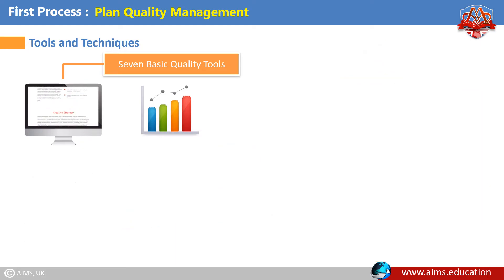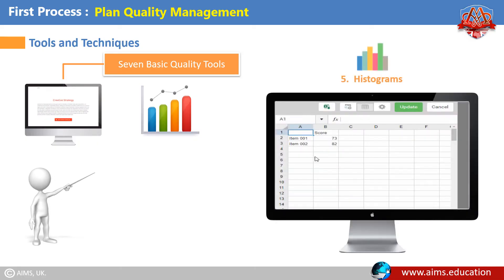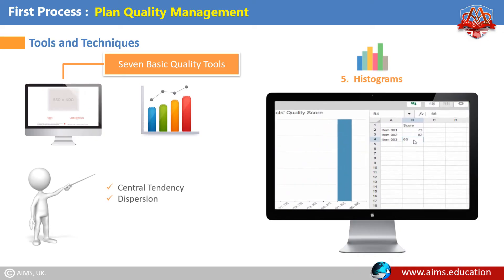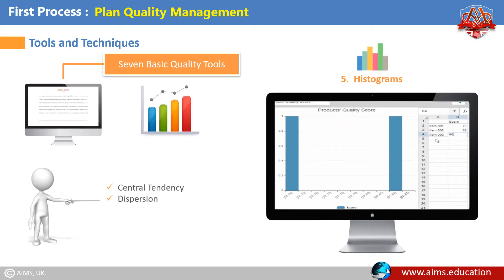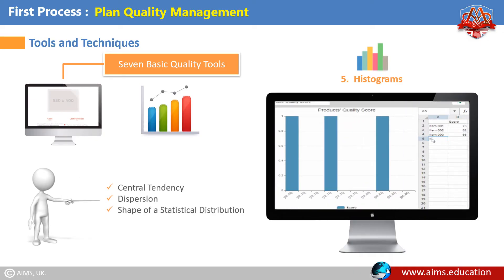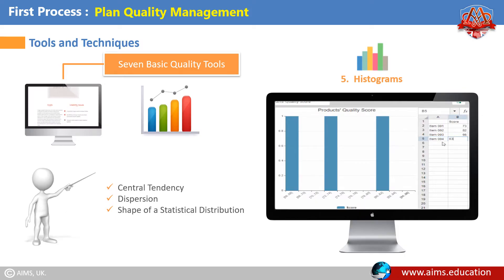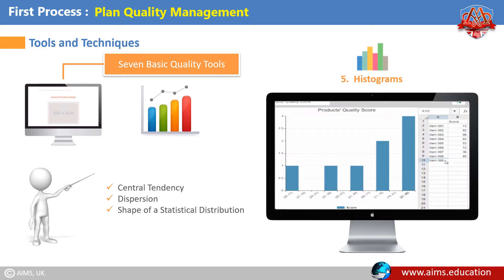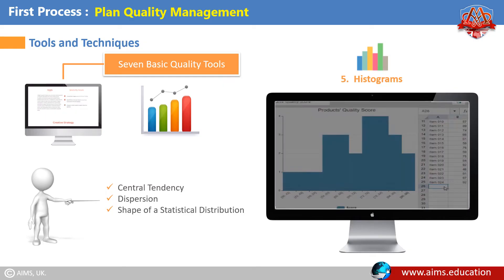The fifth basic quality tool — Histograms: They are a special form of bar chart used to describe the central tendency, dispersion, and shape of a statistical distribution. Unlike the control chart, the histogram does not consider the influence of time on the variation that exists within a distribution.